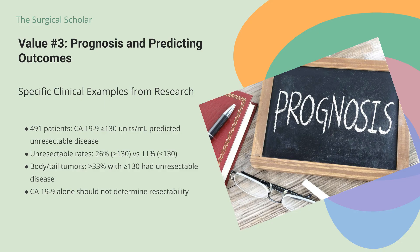In a report of 491 patients undergoing staging laparoscopy for radiographically resectable pancreatic adenocarcinoma, CA-19-9 values above 130 units per milliliter were a significant predictor of finding radiographically occult, unresectable disease. The rates of unresectable disease among patients with CA-19-9 greater than or equal to 130 versus less than 130 units per milliliter were 26% and 11% respectively. While high levels help surgeons select patients for staging laparoscopy, CA-19-9 alone should not be used as an indicator of resectability.